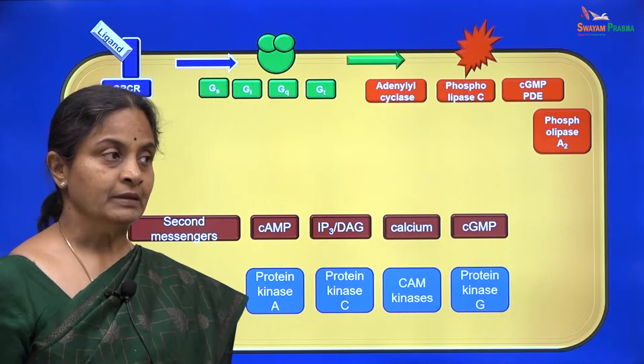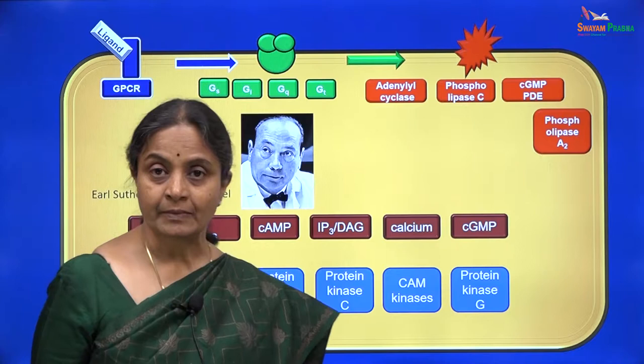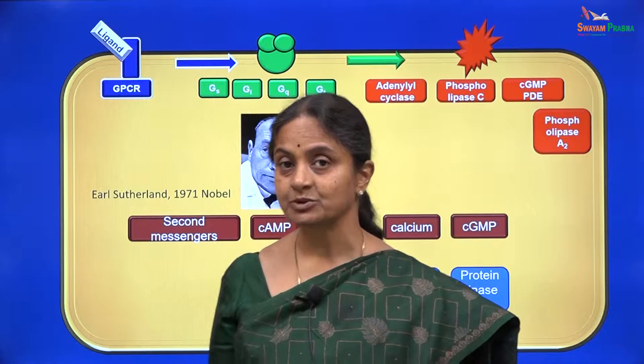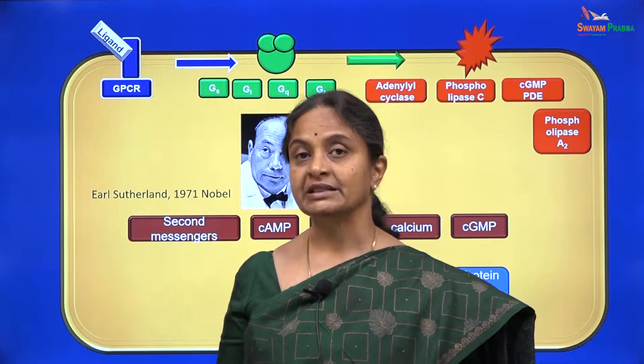The first second messenger to be discovered was cyclic AMP, with particular reference to adrenaline and its mechanism of action. Professor Earl Sutherland won a Nobel Prize in 1971 for his discovery of the cyclic AMP pathway describing the mechanism of action of adrenaline.